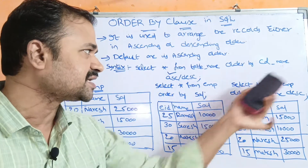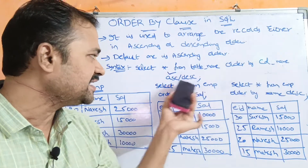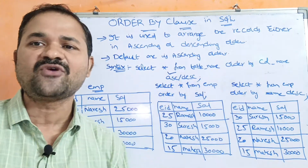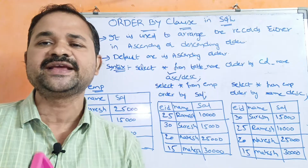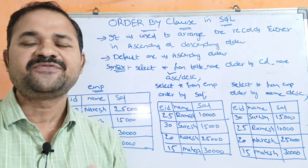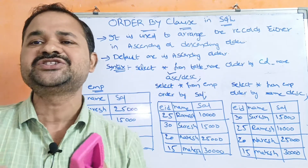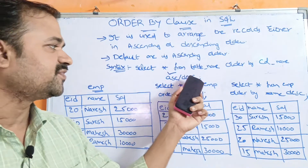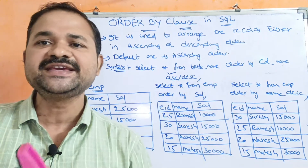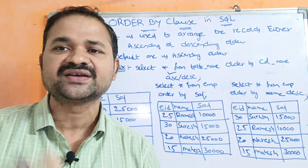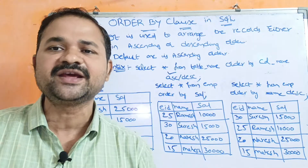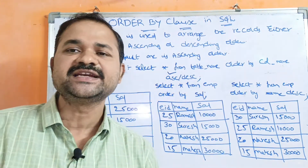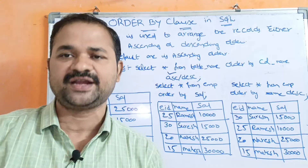So if you don't use either ASC or DESC, then by default the records will be arranged in ascending order. If you want to arrange the records in descending order, then we use DESC, which stands for descending order — that means decremental order. Whereas ASC stands for ascending order, that means incremental order.